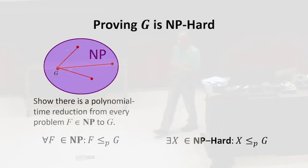If we want to prove some function G is NP-hard, what do we have to do? So what it means to be NP-hard is that there is a polynomial time reduction from every problem in NP to G.